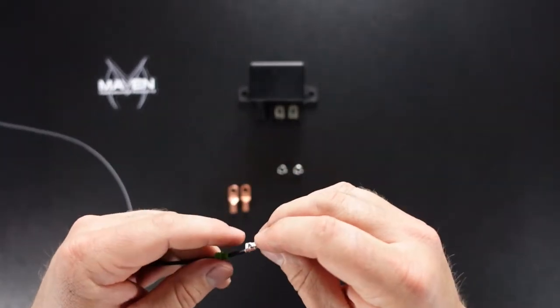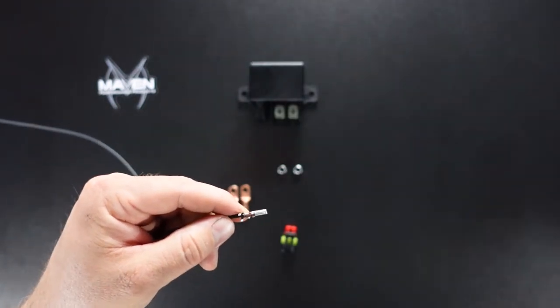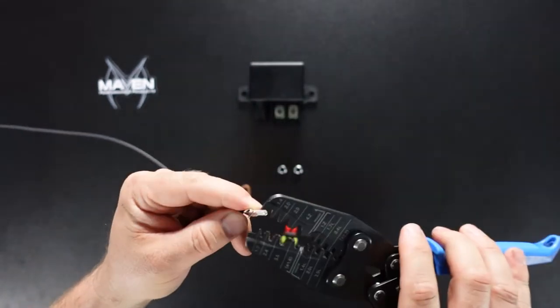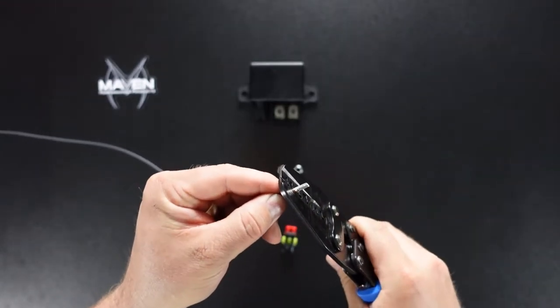So we're going to have a double crimp here. The first crimp is going to be crimping the terminal onto the wire itself, like we've done many times in the past here, doing a good old fashioned W crimp.